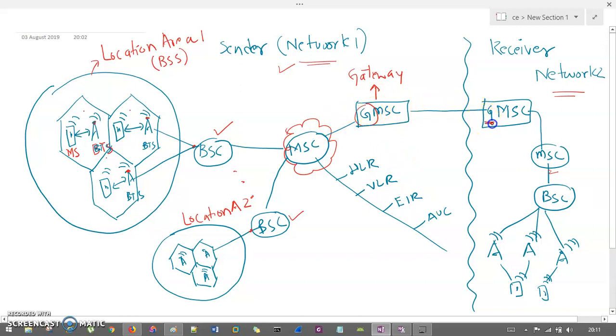Then, at the receiver side, we have another gateway, which takes this connection, forwarded to the MSC, forwarded to the BSC, forwarded to the transmitter antenna, forwarded to that particular user. Now, we are getting it.